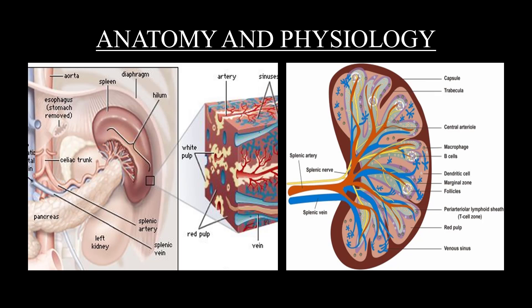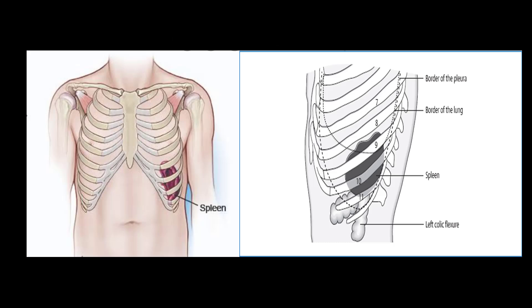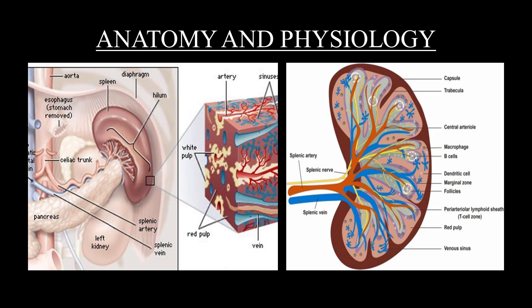The spleen is below the diaphragm on the left side, under the ribs, specifically between ribs 9 and 11. The spleen is an intraperitoneal organ, not a retroperitoneal organ. It lies in the left upper quadrant below the diaphragm.